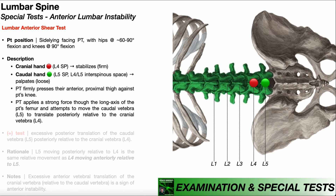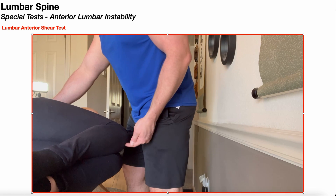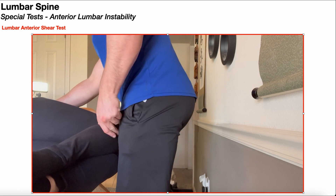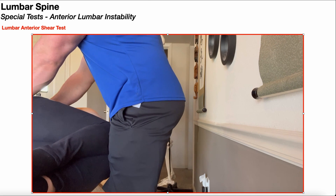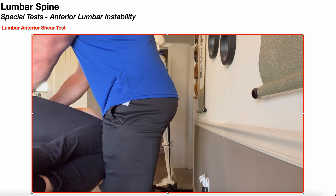Once the PT is stabilizing and palpating the correct vertebrae, the PT then firmly presses their anterior proximal thigh against the patient's knee. From there, the PT applies a strong force through the long axis of the patient's femur and attempts to move the caudal vertebra — which is L5 — posteriorly relative to the cranial vertebra, L4. I'm putting my proximal anterior thigh against the patient's knee and driving a force through the long axis of their femur like that.